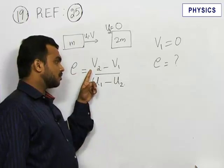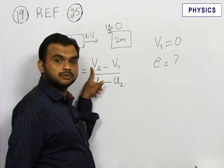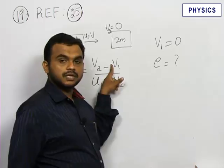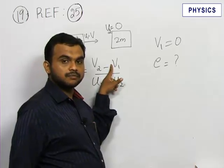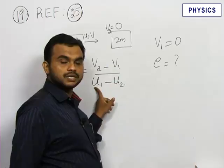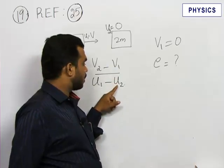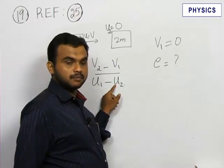Here v2 refers to the final velocity of body 2. v1 refers to the final velocity of body 1. u1 refers to the initial velocity of body 1. u2 refers to the initial velocity of body 2.